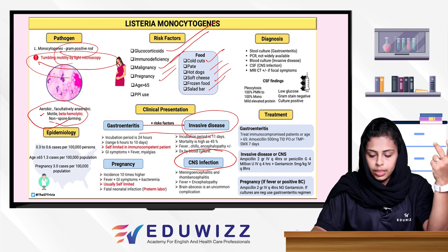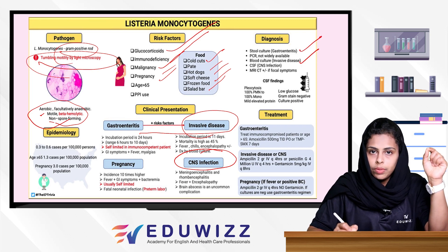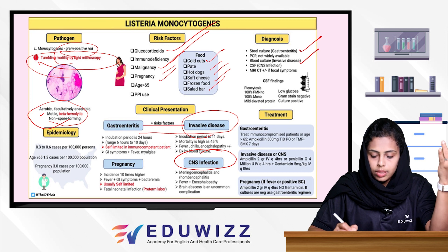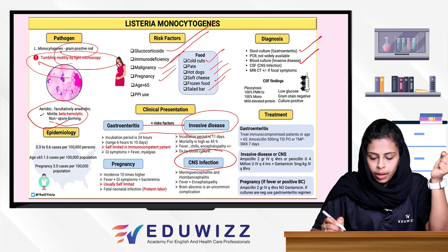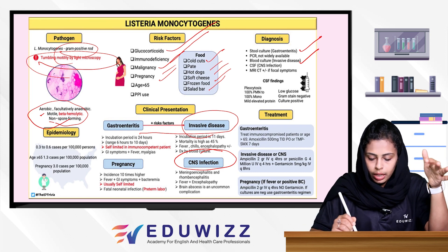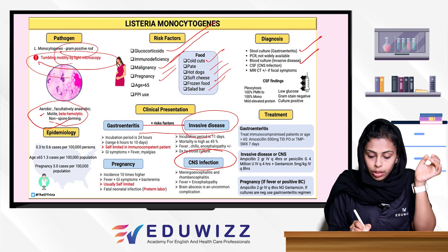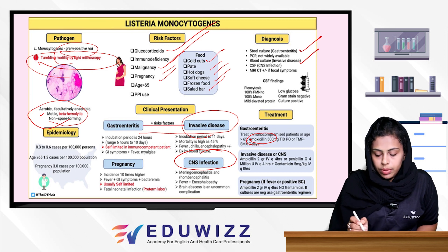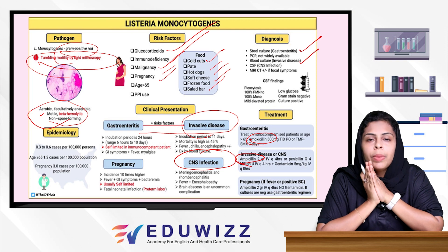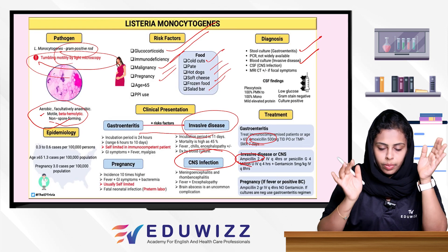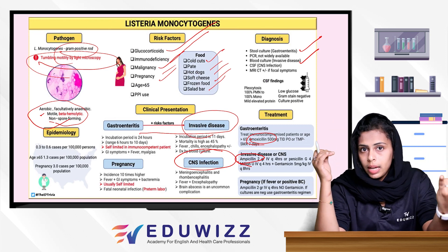For CNS infection, the main treatment is ampicillin. Encephalitis and meningitis are the main CNS manifestations. Listeria Monocytogenes in cases of pregnancy: pregnant women are particularly vulnerable to Listeria. Treatment for gastroenteritis, invasive disease, and CNS disease is primarily ampicillin.